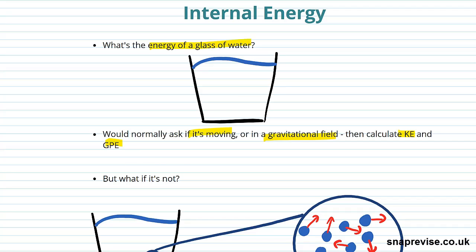If we knew its mass and we knew it was moving at a certain velocity, we'd know it'd have KE of half mv squared. If we knew it had been displaced by delta H in a gravitational field, we'd know that it'd have GPE equals mg delta H.